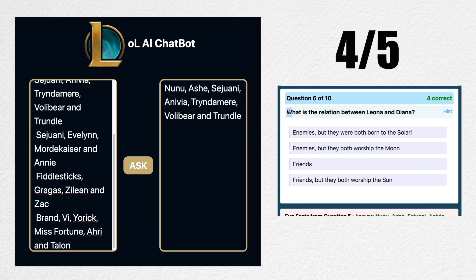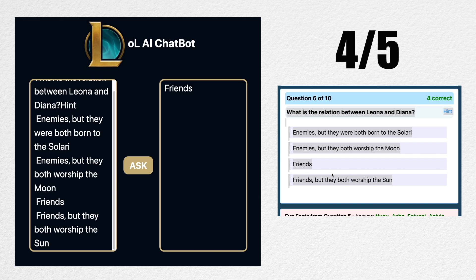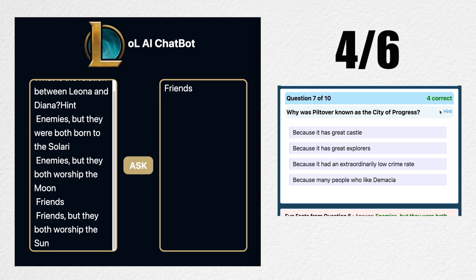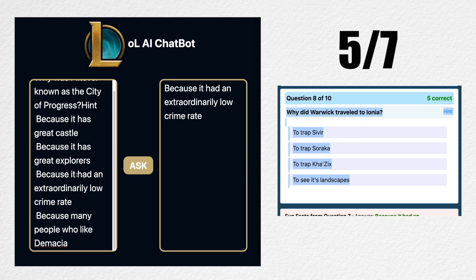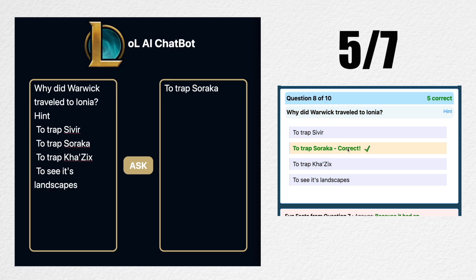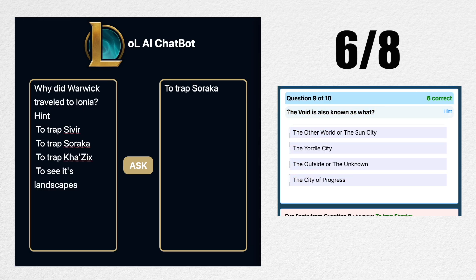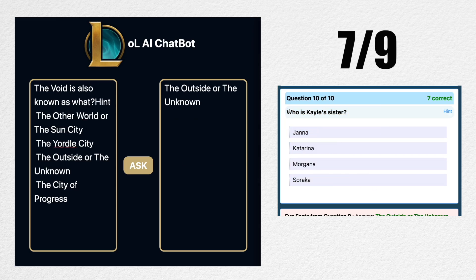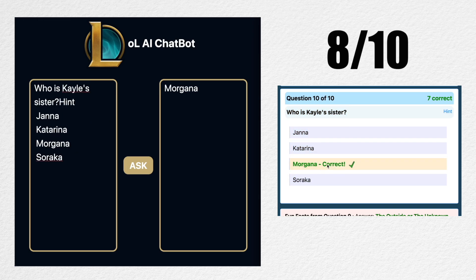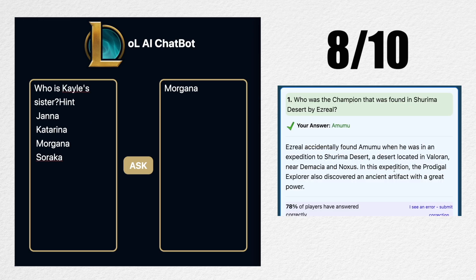What is the relation between Leona and Diana? Friends? Oh, they're enemies — so it's not perfect. Why was Piltover known as the City of Progress? Had an extraordinarily low crime rate. Why did Warwick travel to Ionia? To trap Soraka — that's correct. The Void is also known as what? The Outside or the Unknown — correct. Last one: who is Kayle's sister? Morgana — and that is correct. So it actually got 8 out of 10 correct.